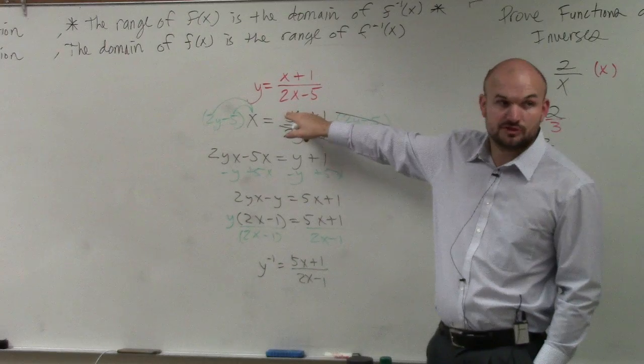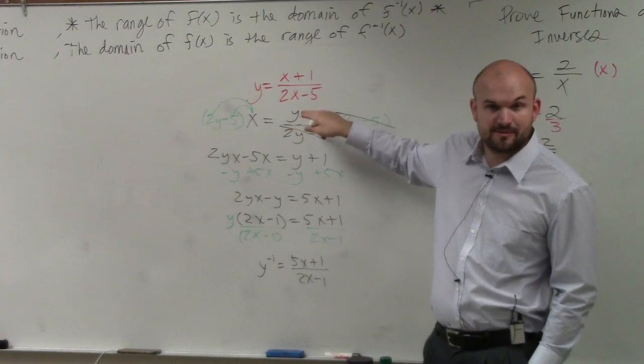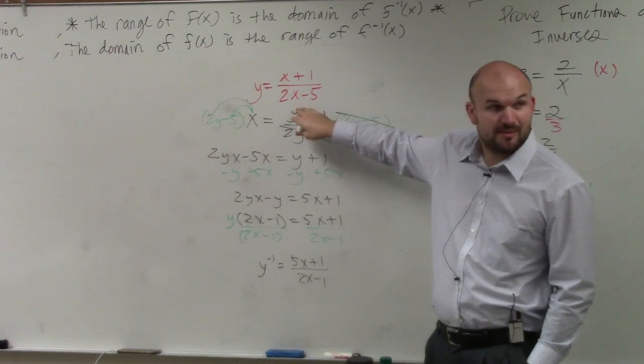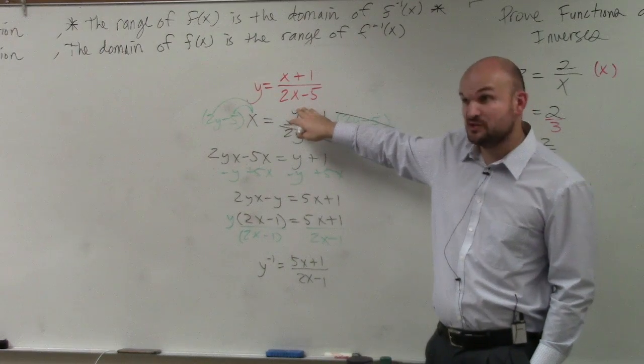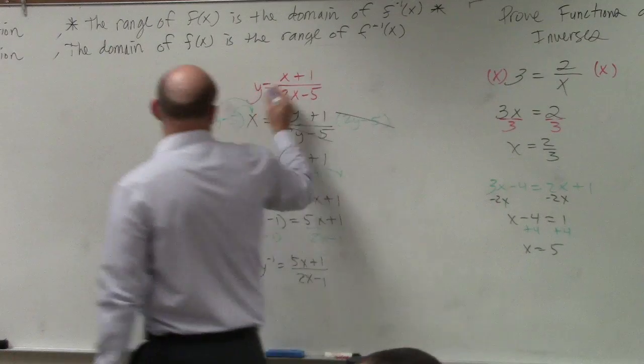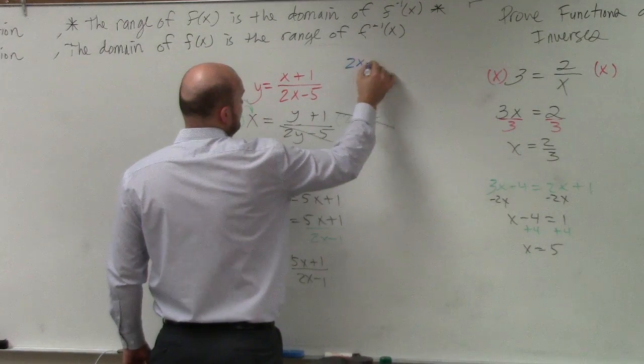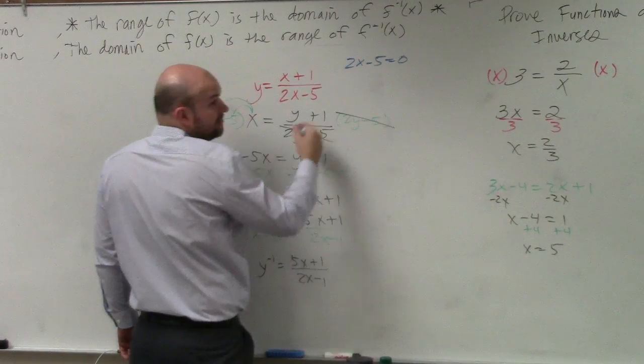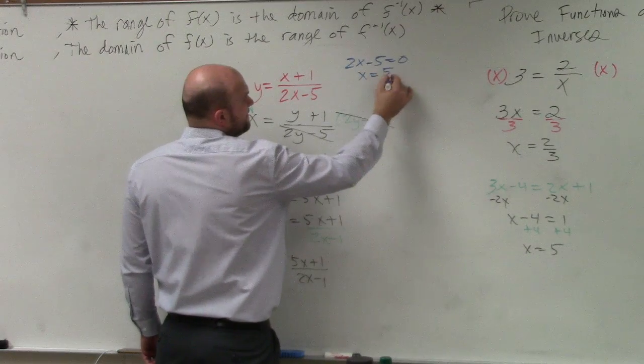But let's go and look at the domain and range here real quick. Ladies and gentlemen, the domain, there's no radicals. So we're only looking at the denominator, right? Is it possible for us to divide by 0? Yes. So we need to find what value is going to make our denominator 0. So we set our denominator equal to 0, and we solve. x equals 5 halves.